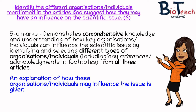Question two is probably the easiest question on the paper. It's worth six marks and it asks you to identify the different organisations or individuals mentioned in the articles and suggest how they may have an influence on the scientific issue. To get the full marks you should state the name of the person or organisation and give a comprehensive explanation as to how they influence the scientific topic that the articles are based on.